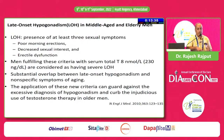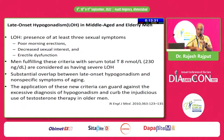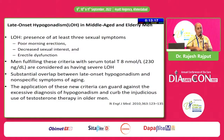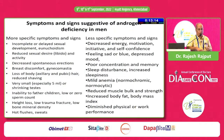How is late onset hypogonadism defined? Three sexual symptoms: poor morning erections, decreased sexual interest, and erectile dysfunction. If a man fulfills these three criteria and we order testosterone, and the testosterone level is less than 8 nanomoles per liter or 230 nanograms per deciliter, then he is considered to have late onset hypogonadism.